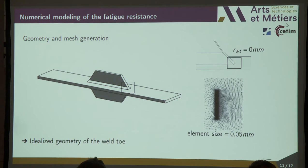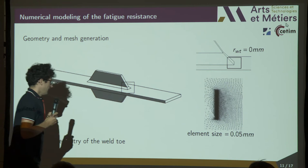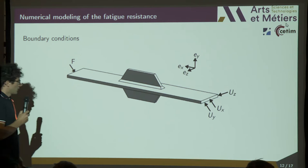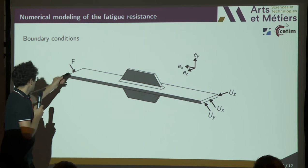About geometry, we used an idealized geometry of the weld toe — that means no radius — and an element size in the stress concentration zone of 50 microns. About the boundary conditions, we blocked the displacement on one face for U-X, the U-Y displacement on one line, and U-Z on another line, and we applied a uniform pressure on the opposite face.